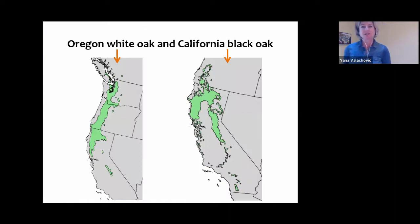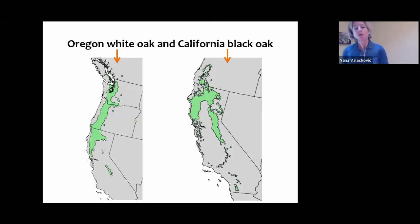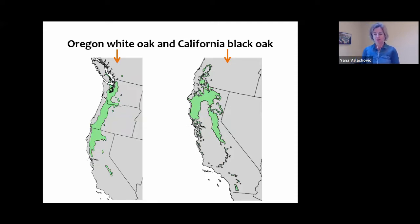I'm going to focus on two species specifically today: Oregon white oak and California black oak. You can see the distributions shown here. Oregon white oak has a pretty broad distribution that comes from Vancouver, British Columbia, all the way down, and is well known from within the Willamette Valley as well as throughout northern California. California black oak is more of a California species, extensively found both in the coast ranges and in the Sierra range. These two species often grow together, but sometimes they're also in distinct stands on their own.